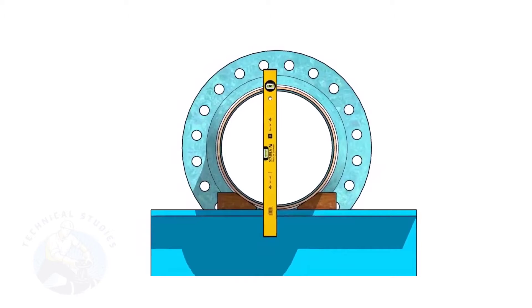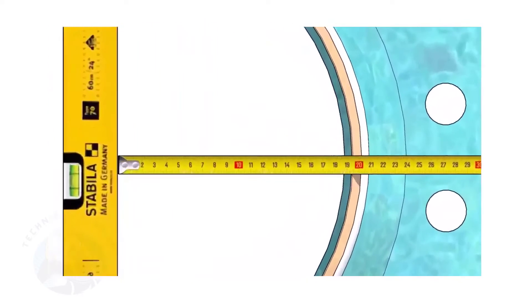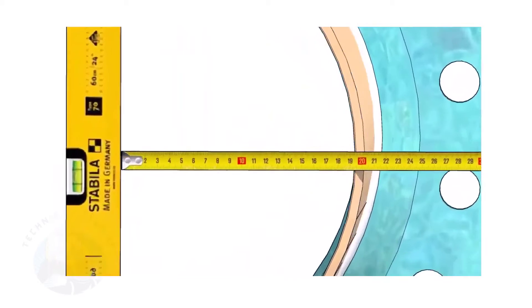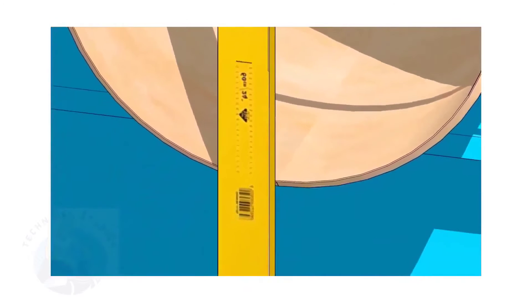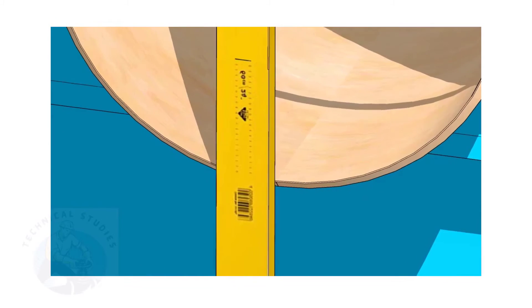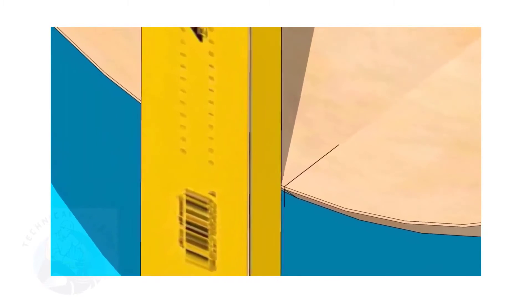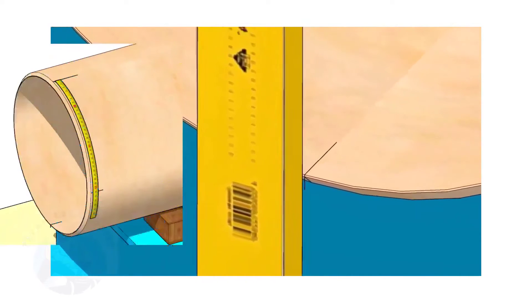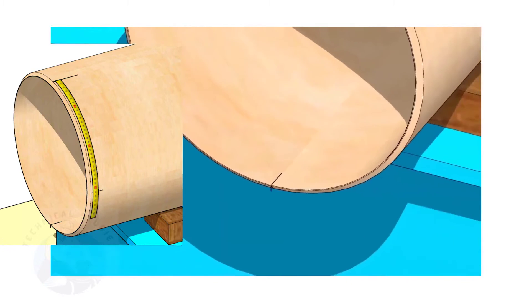Hold the spirit level vertically and transfer the top center mark to the bottom side as shown. Mark the quarter circumference on both sides of the pipe.